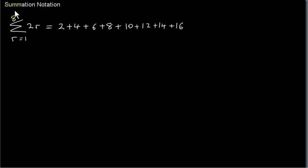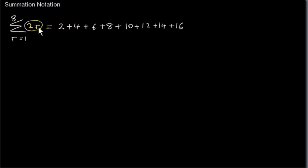The first thing to discuss in this video is summation notation. We have a series and we want to consider the general term. The general term is 2r: if r equals 1 we get 2, if r equals 2 we get 4, if r equals 3 we get 6. So the general term tr equals 2r.